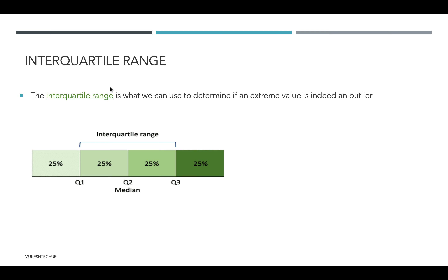On the graph, we can define Q1, Q3, the median, the minimum, and the maximum. The interquartile range lies between Q1 and Q3. The median is the middle point, and we also identify the minimum and maximum values.